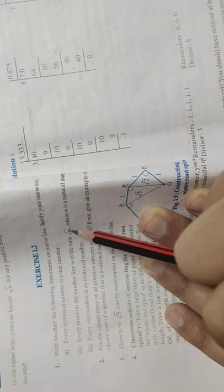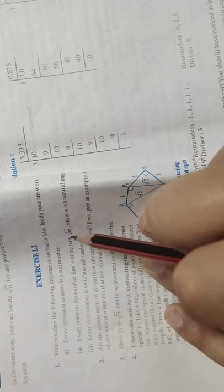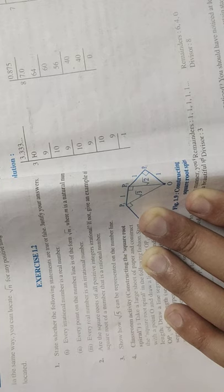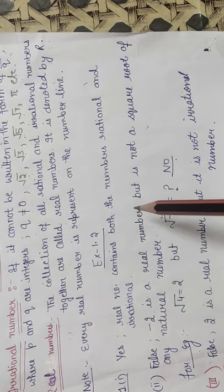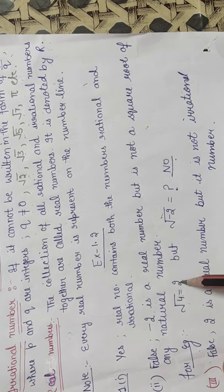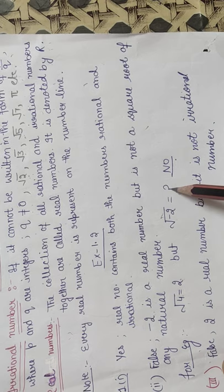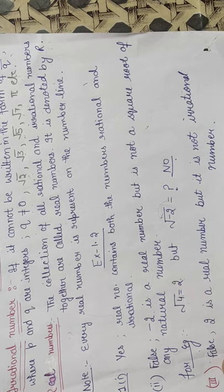The second part is: every point on the number line is of the form √m, where m is a natural number — meaning we can represent every point in the form of √m. This statement is false. If I take −2, it is also a real number but its square root is not a natural number. Also, √4 = 2, and 2 is a natural number, but −√2 has no such root. So we can't represent every number in the form of √m where m is a natural number.